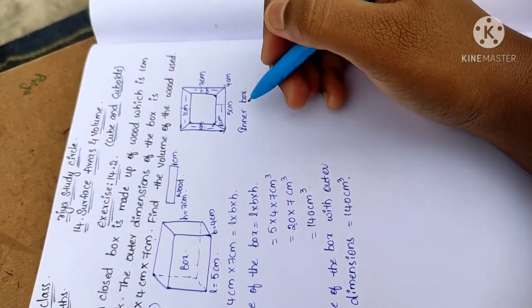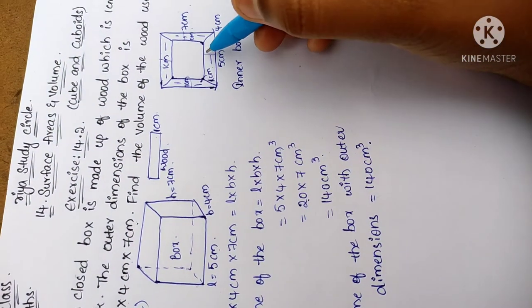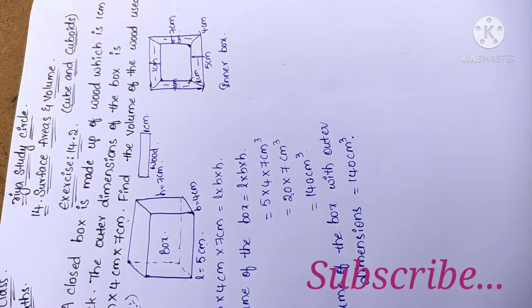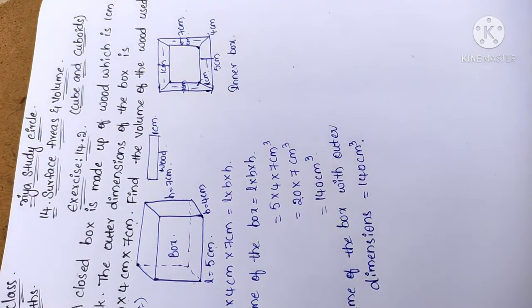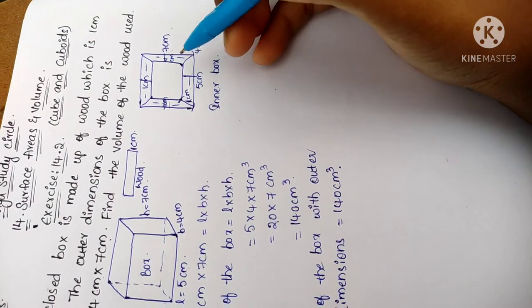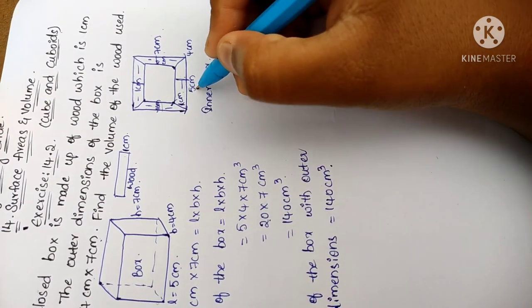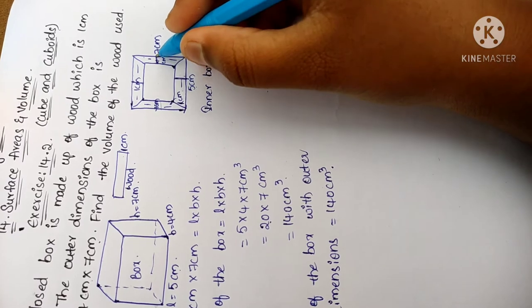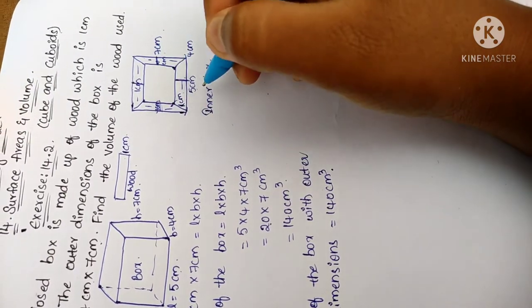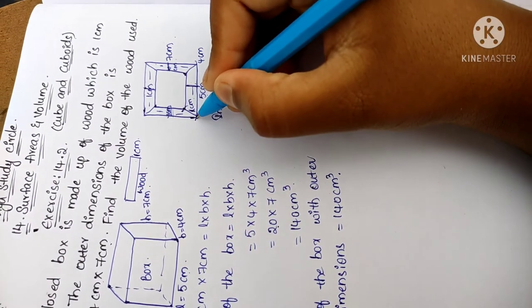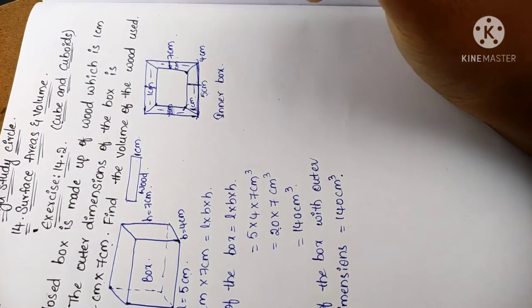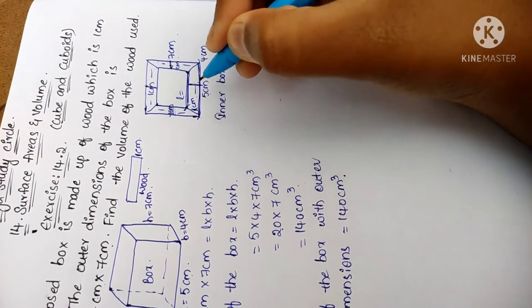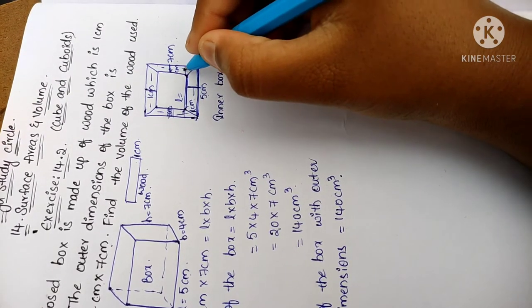Next we have to find the volume of the inner box. After subtracting the additional wood thickness, we get some values, and with those values we have to find the volume of the inner box. The length is 5 cm, breadth is 4 cm, and height is 7 cm, but we have a thickness of 1 cm on each face.